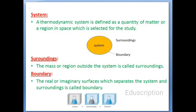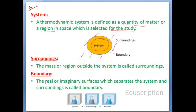The most important question: what is the system? A thermodynamic system is defined as a quantity of matter or a region in space which is selected for study. The system is that where we concentrate and observe to find out the properties. Surrounding is the mass or region outside the system. The real or imaginary surface which separates the system and the surrounding is called the boundary. The boundary can be real or imaginary.